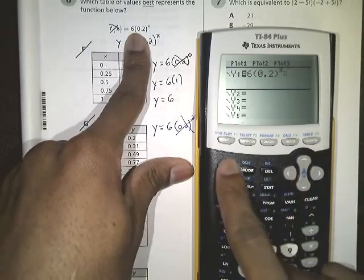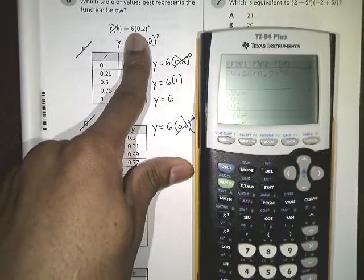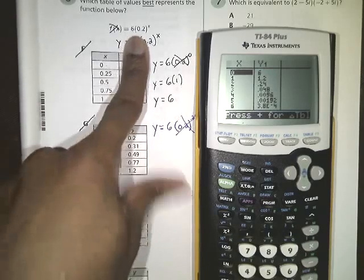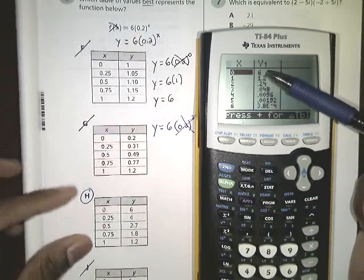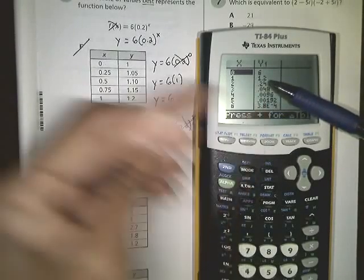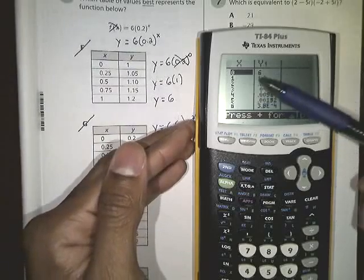and then if you press table, this button here, so you're going to have to press 2nd, and then graph, it will give you a table of values. So when we plugged in a 0, we should have gotten out a 6, and then when we plugged in a 1, it says that we should have gotten out a 1.2. So it automatically gives you your table of values here.